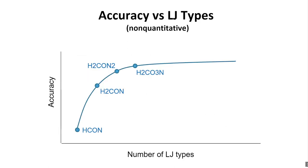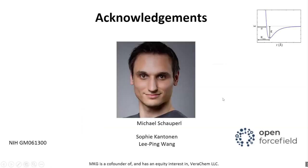Going back to our conceptual graph, we can put an impressionistic set of data on it — not quantitative, but showing accuracy versus number of Lennard-Jones types: it's not great for HCON, we get a nice boost by splitting hydrogens, and we get modest potential boosts by splitting nitrogens and oxygens. I'll wrap up by acknowledging primarily Michael Schauperl, who's done all this work beautifully, Sophie Canton who developed some initial ideas, and Li-Ping Wang who helped with Force Balance and interpretation of the data. Thanks to everyone in Open Force Field and to NIH for funding.